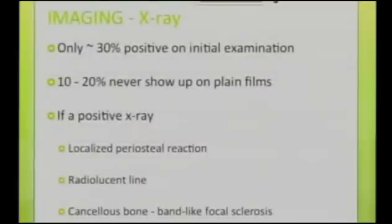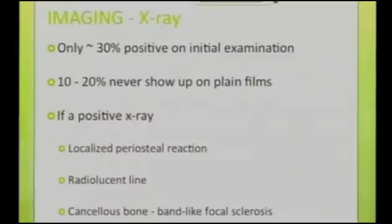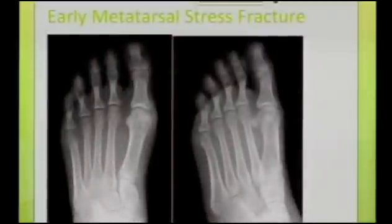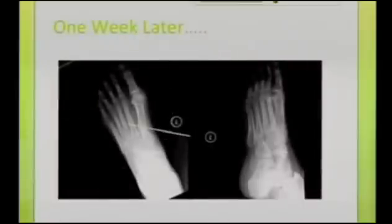On imaging, only 30% is positive on initial examination. Ten to 20% never show up on plain x-rays. On x-ray it may not be visible on the first day or first week — normally it appears on the third to fifth day or the second week, showing periosteal reaction or a radiolucent line, or focal sclerosis on cancellous bone. This first-day x-ray shows nothing, but on the second week you can see a small focal area on the third metatarsal mid-shaft.